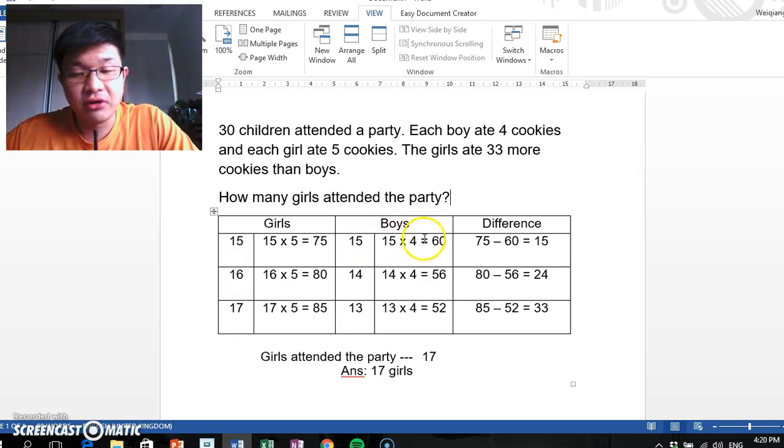Because each boy only ate 4, we increase the number of girls since each girl ate 5. We do that by trying number 16. 16 girls would eat a total of 80, 14 boys would eat a total of 56. The difference is 24.